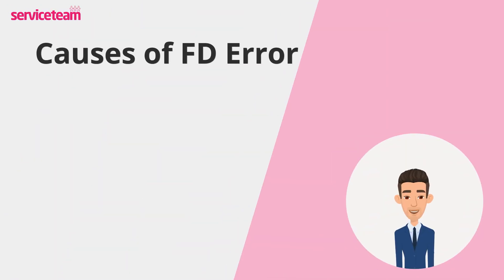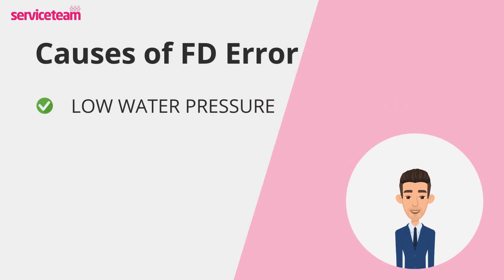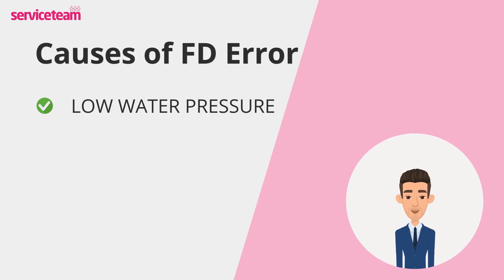Let's review the most common reasons for the FD fault on your Ideal Boiler. The first cause is low water pressure. Your boiler needs a steady pressure to run smoothly, ideally around 1.3 bars. If it drops below 1, your boiler might not detect enough water flow, which can trigger the FD fault code.